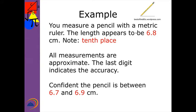So if you measure something that's seven inches, you're really only guaranteed that that measurement is going to be between six inches and eight inches. Here's an example. You measure with a metric ruler that a pencil is 6.8 centimeters long. Notice the place that I measured to was the nearest tenths place. Since all measurements are approximate, the last digit indicates the accuracy. So it either can be a tenth smaller, which gives you 6.7, or it can be a tenth bigger.